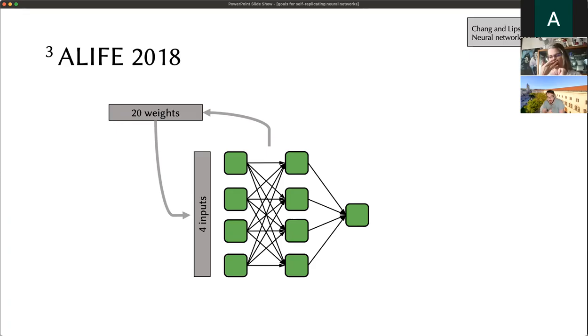A neural network like the one we see here already has 20 weights, which is the minimum parameters I need to define this network, and it only has four inputs. So that's a problem. I cannot directly input 20 weights into four inputs.